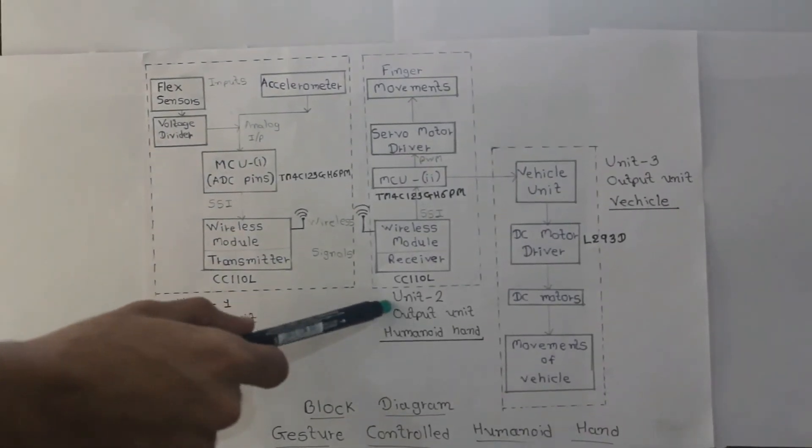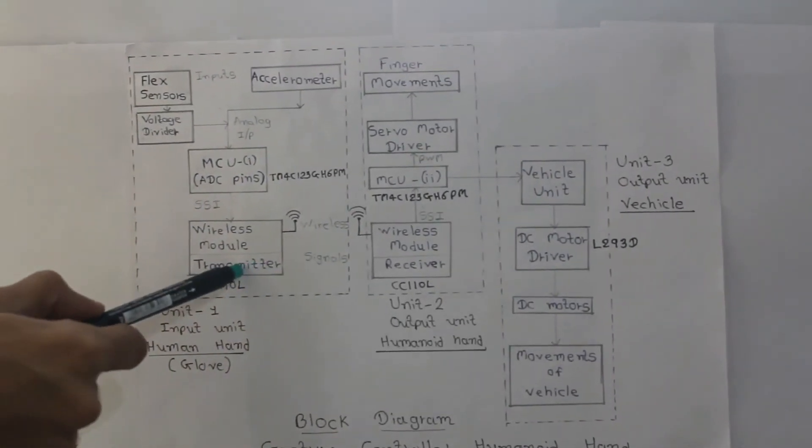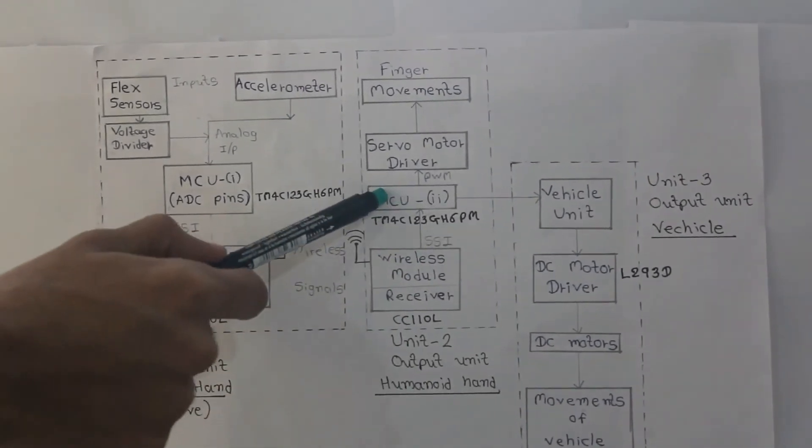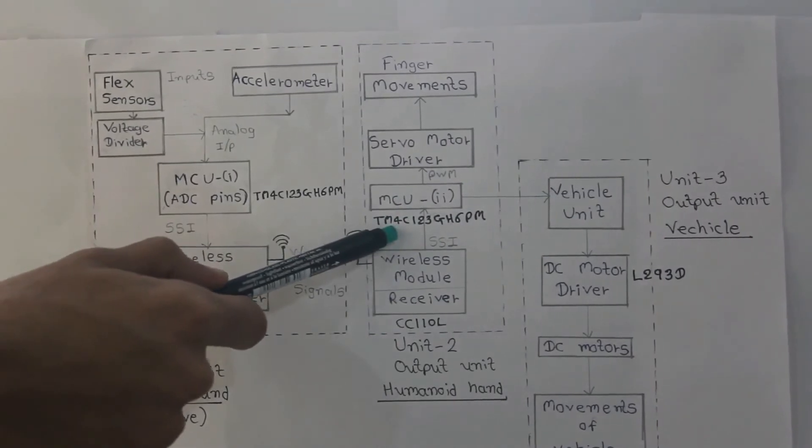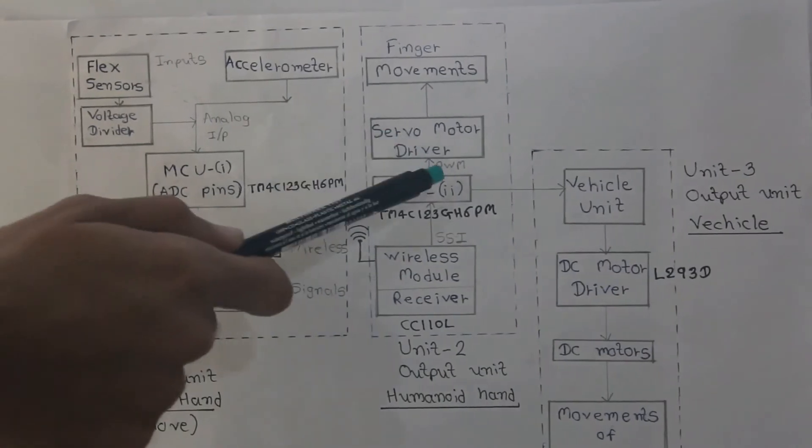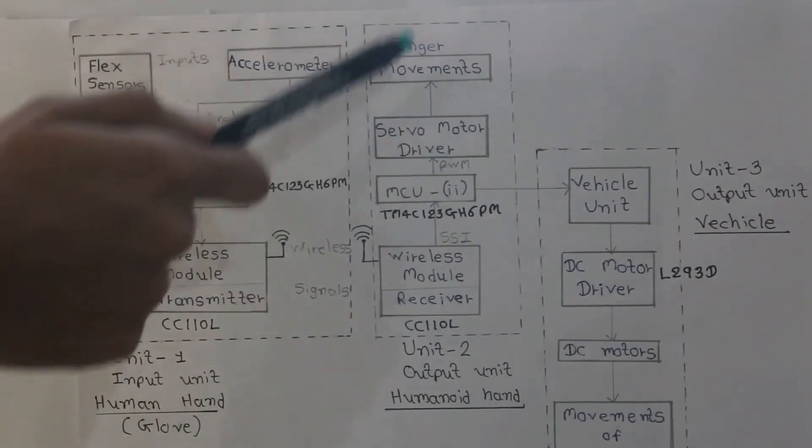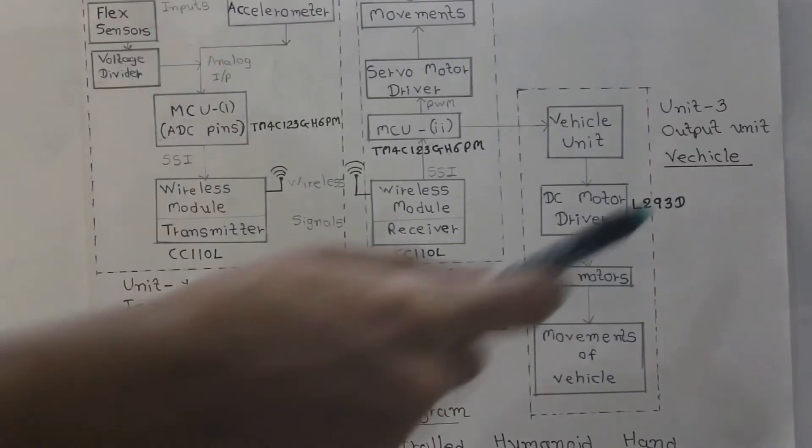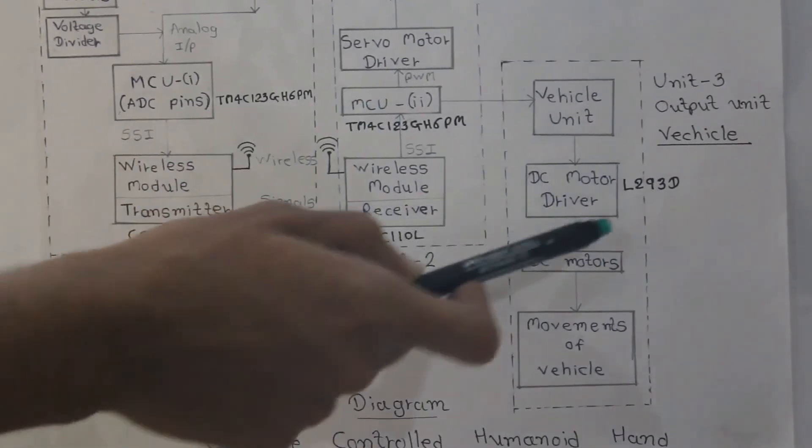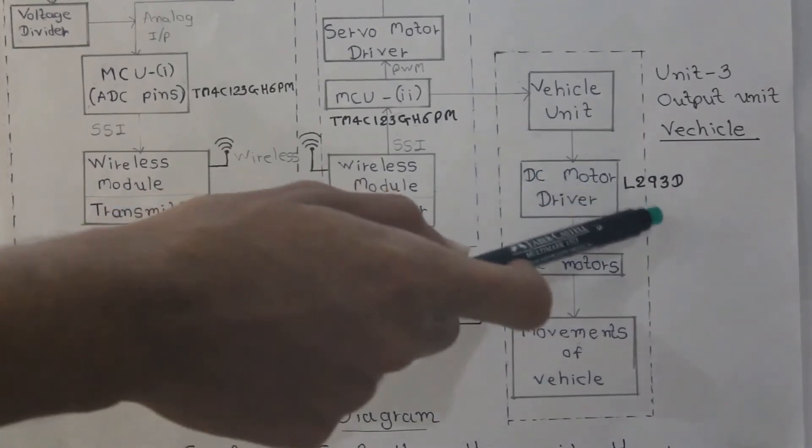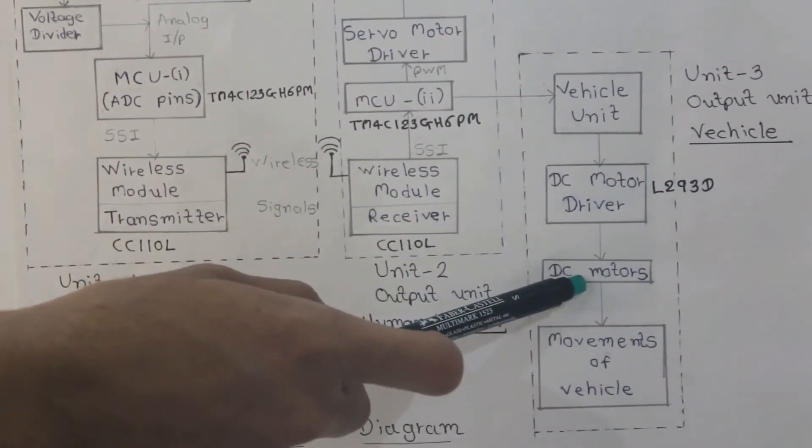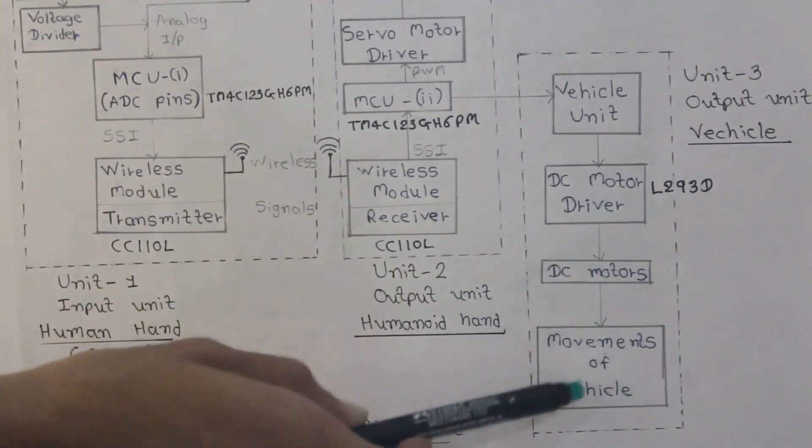Now I will discuss about unit number 2. Signals transmitted by the transmitter are received by the receiver which is CC110L. These signals are applied to the microcontroller which is the same microcontroller. Microcontroller will generate the PWM signals and servomotors drive according to these PWM signals. In this way we get the movement of fingers. Unit 3 is also controlled by the same microcontroller. This microcontroller will generate the signals for DC motor driver. Here we are using L293D IC to drive the DC motors. We are using 4 DC motors. So in this way we get the movement of vehicle.